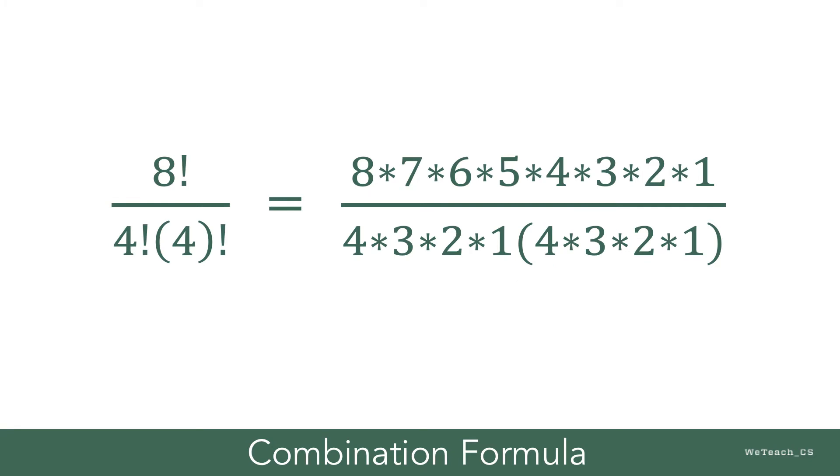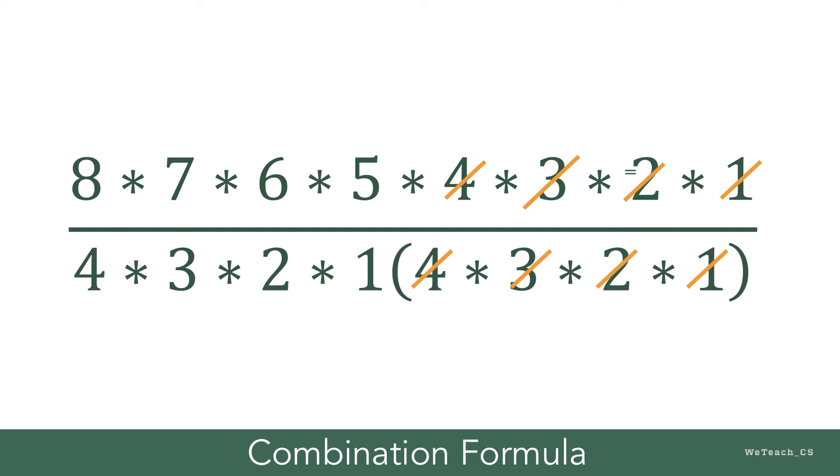Now, let us work through simplifying 8 factorial divided by 4 times 4 factorial. We will first expand the numerator and the denominator as shown here.